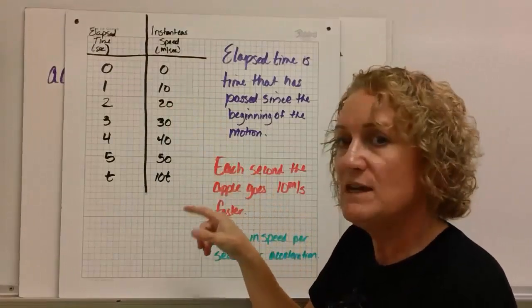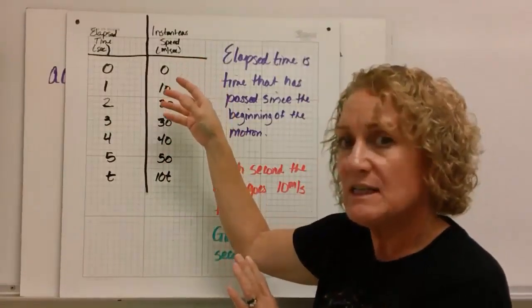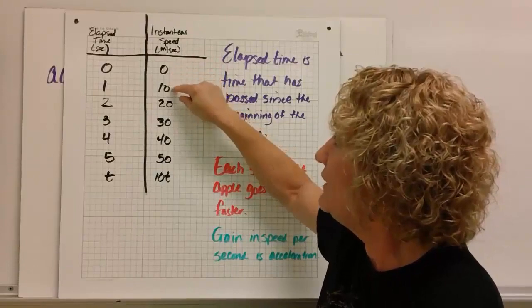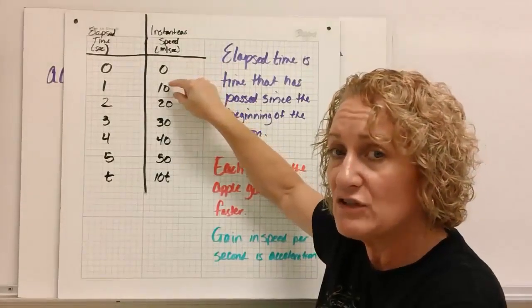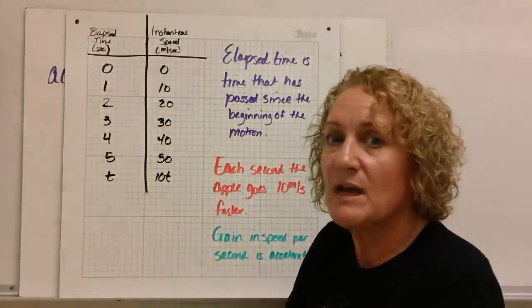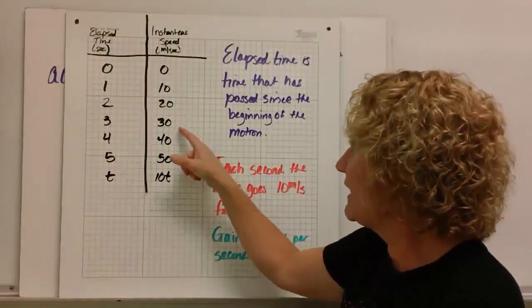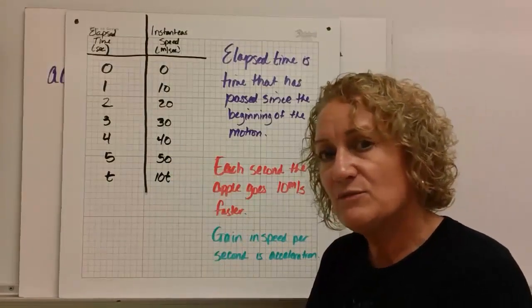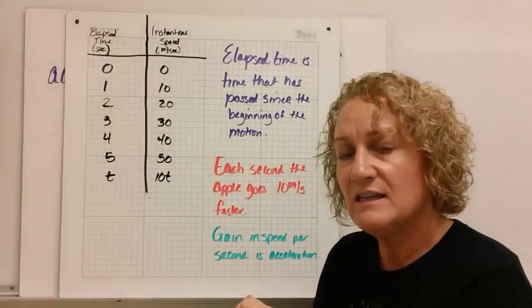Now it looks to me like every second, the apple goes 10 meters per second faster than it did the second before. We use instantaneous speed instead of average speed because if we want to take the average speed right here, we add these two together, 0 and 10 is 10 divided by 2 is 5 meters per second. So average speed and instantaneous speed are sometimes totally different things. Every second, it goes 10 meters per second faster. That means we have acceleration.